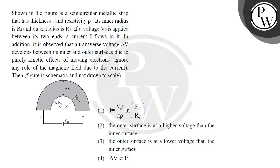Hello. Let's see this question. So this question says: shown in the figure is a semicircular metallic strip that has thickness t and resistivity rho. Its inner radius is r1 and outer radius is r2. If a voltage V0 is applied between its two ends,